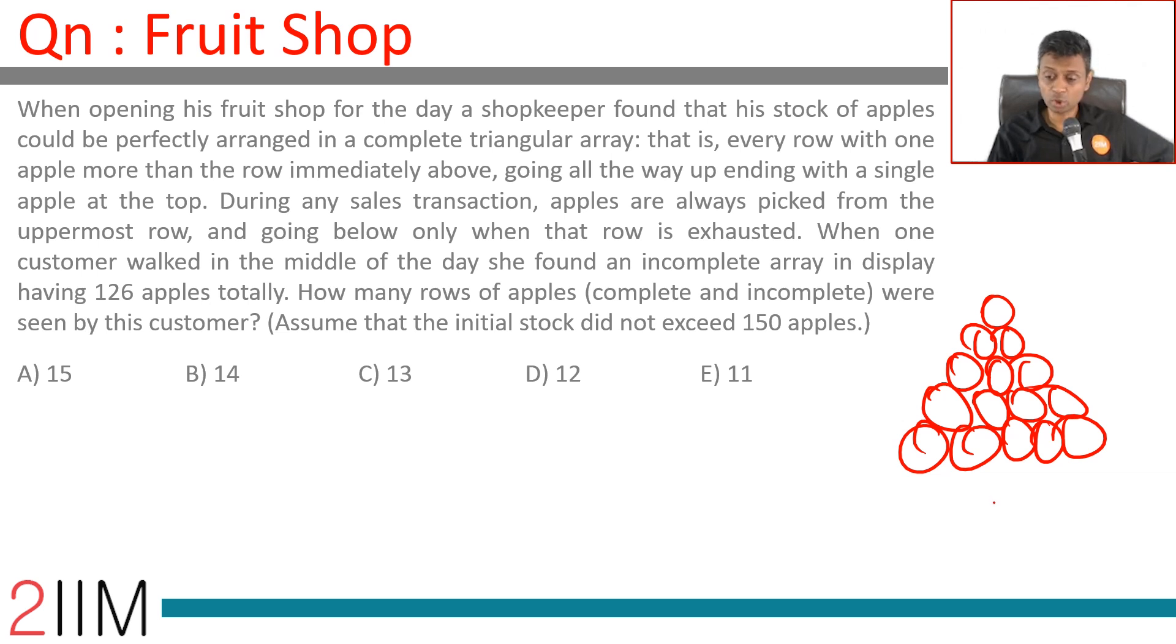Going below only when the row is exhausted. So they pick this, then this, then this. You pick from here, the whole thing will fall down, that much is obvious. A customer walked in the middle of the day. She found an incomplete array in display having 126 apples totally. How many rows of apples were there?